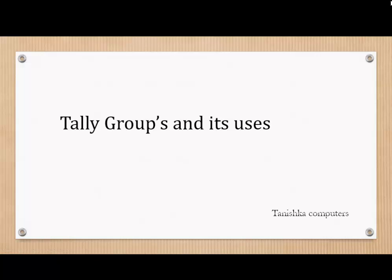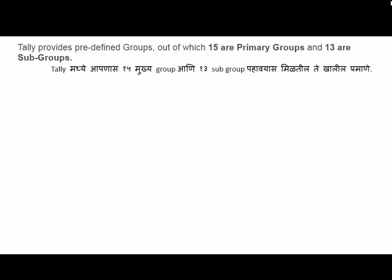Hello friends, today we discuss about groups in Tally — how to use them and which group is used where. Tally provides predefined groups, out of which 15 are primary groups and 13 are subgroups. Here are details about the predefined groups in Tally ERP9.